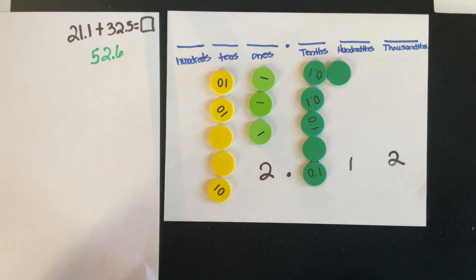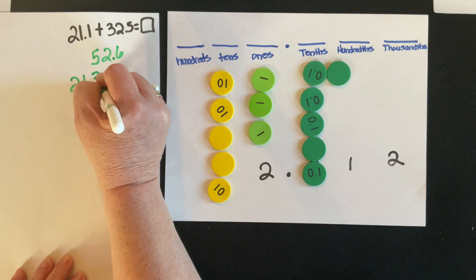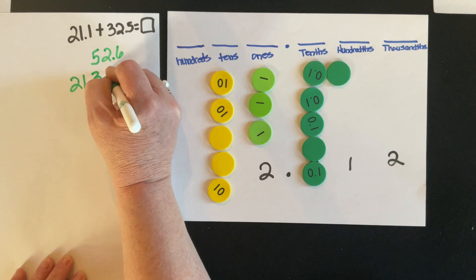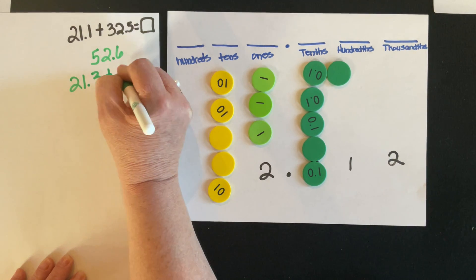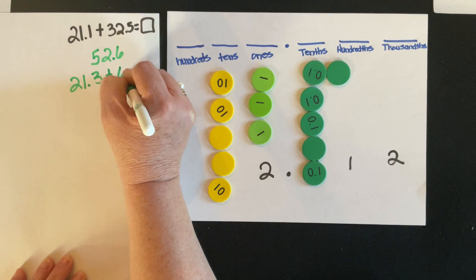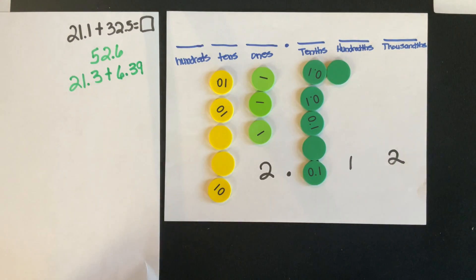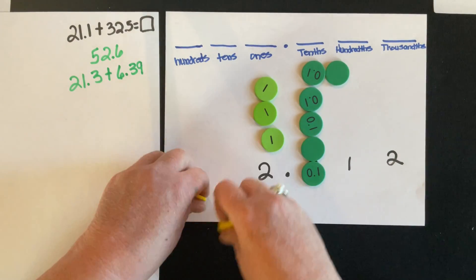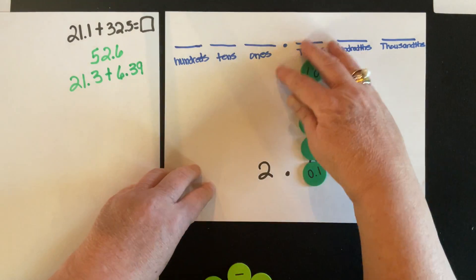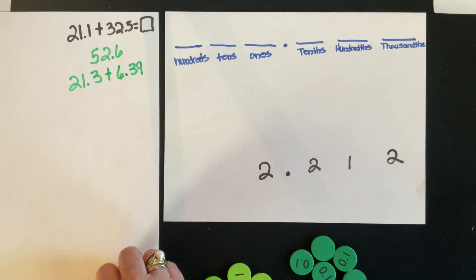Let's take a look at a different problem. What if we had 21 and three-tenths and I wanted to add this to six and thirty-nine hundredths? Let's clear our boards and represent the first number.